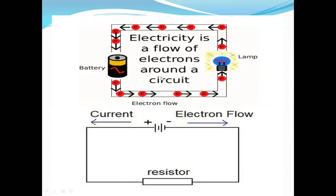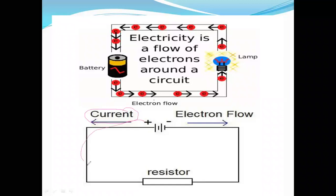Electric charge flows from negative to positive direction. Current is flowing from positive to negative direction, while electrons are flowing from the negative direction to the positive direction.